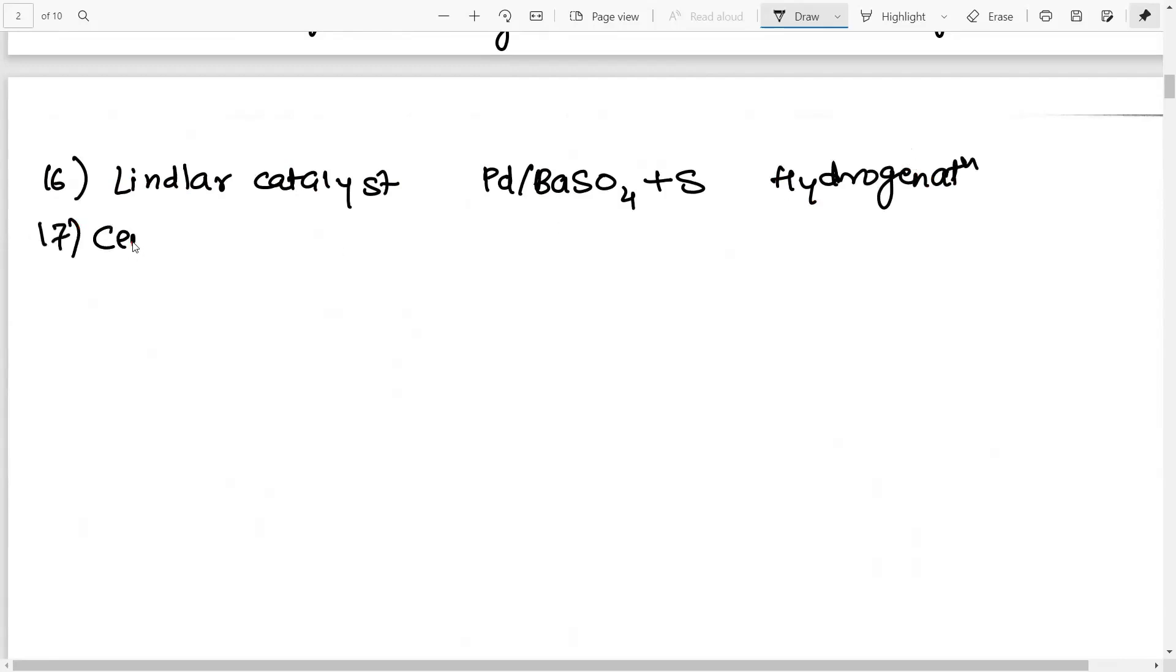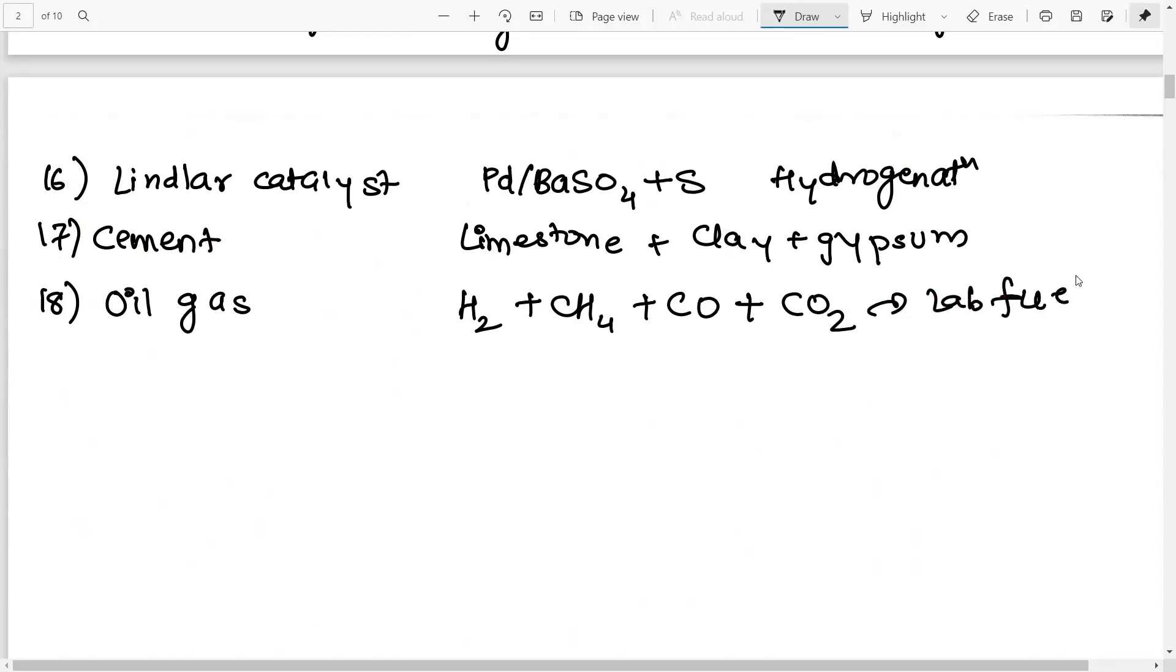Then you should also know the composition of cement. So cement is basically a mixture of limestone along with clay and gypsum. Now I absolutely do not need to tell you what the uses we all know. It is basically used for construction purposes. Then next one, as I was telling you oil gas. Oil gas is a mixture of H2 plus CH4 plus carbon monoxide plus carbon dioxide used as a lab fuel. So a laboratory fuel. Then we have the next one that is called as power alcohol. Now power alcohol is basically a motor fuel. So what it is composed of? It is composed of 80 percent of petrol, 20 percent ethanol and some trace amounts of benzene. So this particular solution of all of this is called as a power alcohol.